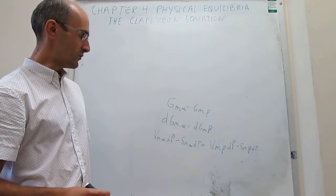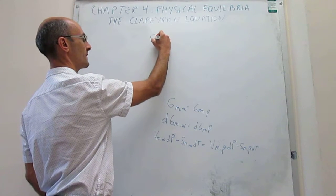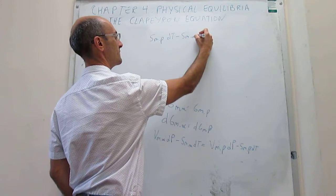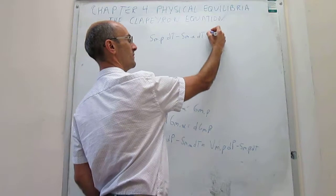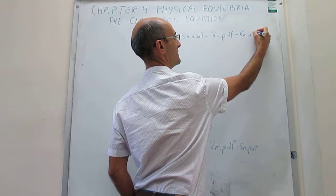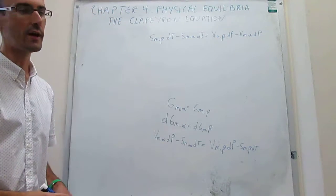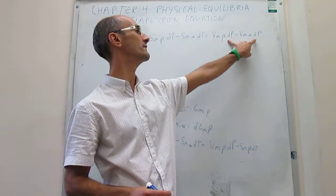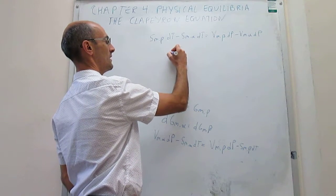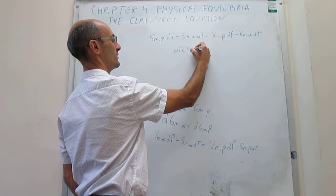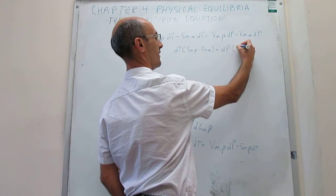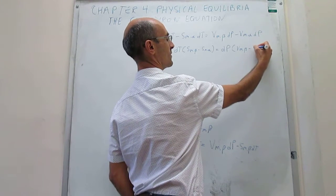So we can consolidate terms. Using the molar entropies first: if we consolidate the molar entropies, you get the molar entropy of the beta phase times dT minus the molar entropy of the alpha phase times dT, which has to be equal to the molar volume of the beta phase times dP minus the molar volume of the alpha phase times dP. Now we have terms that are alike depending on the same differential on different sides of the equation. Taking the common factor of each differential, we get dT times (Sm,β − Sm,α) equals dP times (Vm,β − Vm,α).